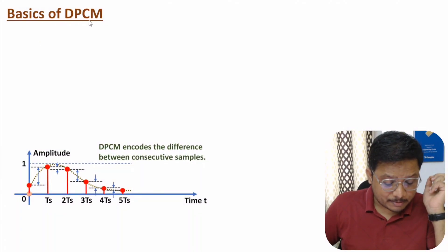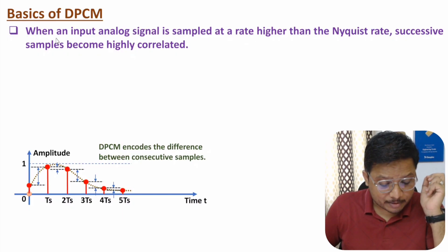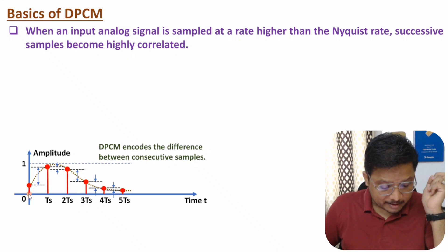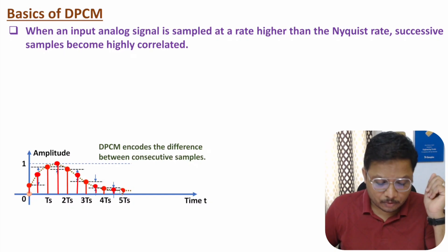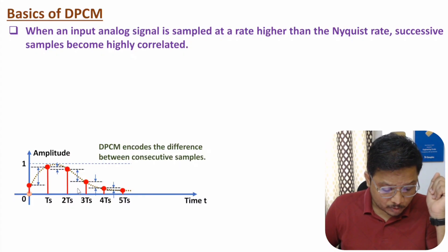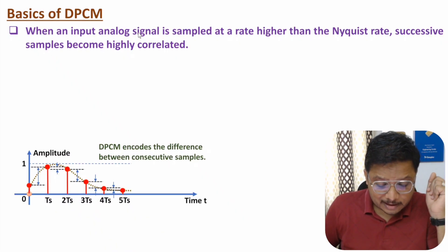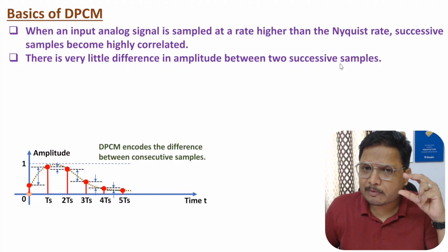Now let me explain the basics of Differential PCM. When an input analog signal is sampled at a higher rate than the Nyquist rate, consecutive samples become highly correlated. For example, with a sampling rate fs and samples spaced by ts duration — if you increase the sampling rate, more samples will be present, and the difference between samples reduces. When sampled above the Nyquist rate, successive samples become highly correlated with little difference in amplitude between them.